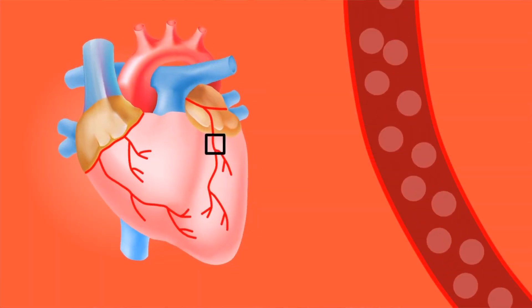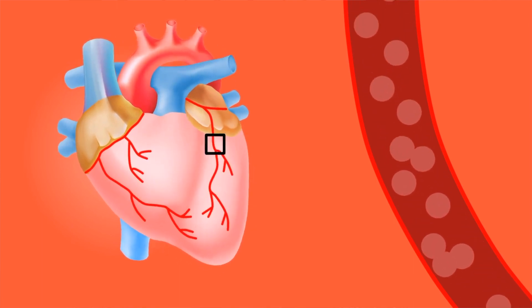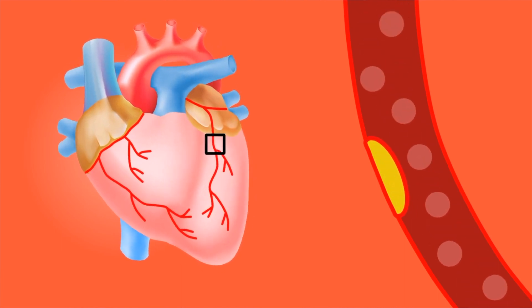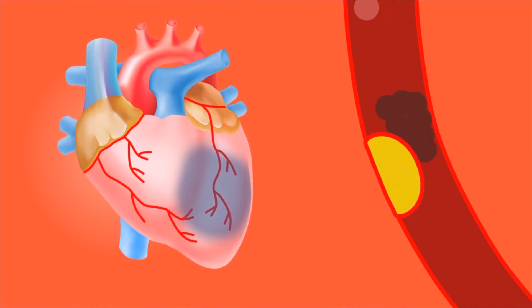The heart can also be involved. There can be inflammation of the heart muscle called myocarditis, and both heart cells and vessels are rich in ACE2 receptors. Blood clots traveling to the heart increase the likelihood of a heart attack and arrhythmias — an irregular heartbeat.